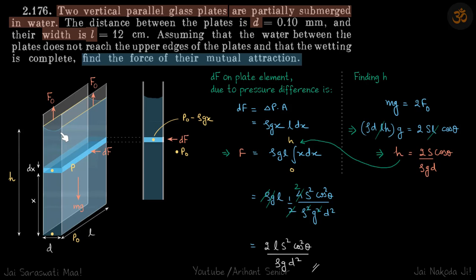For the whole water column in the capillary, we'll do force balance. mg equals 2f naught, and f naught equals s into L into cos theta.